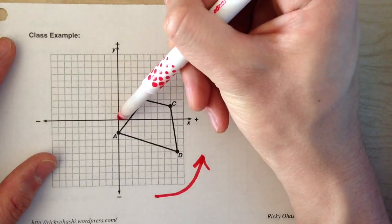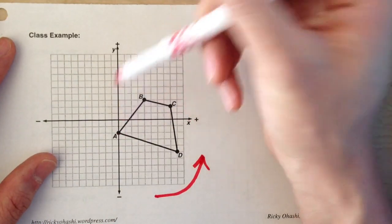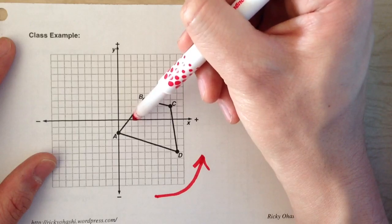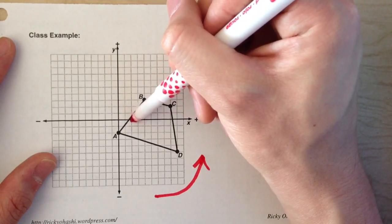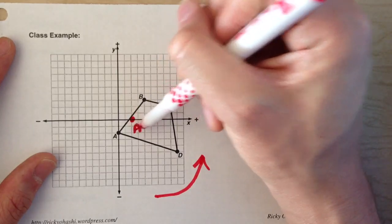So right now it's two steps away from the origin. When it rotates counter-clockwise 90 degrees, it's going to end up two steps away from the origin on this axis.